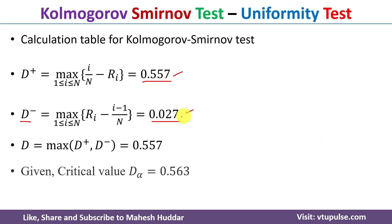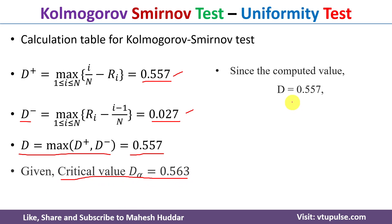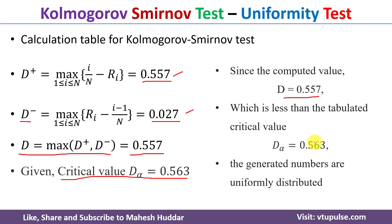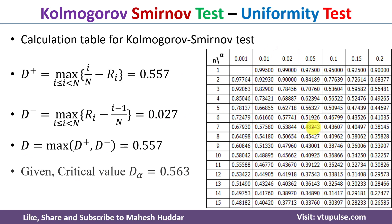Once we calculate D+ and D-, we compute the D value, which is the maximum of D+ and D-. Comparing 0.557 and 0.027, we get D equal to 0.557. The critical value is given as 0.563, and the computed value 0.557 is less than the critical value. So the generated numbers are uniformly distributed. If the critical value is not given but the alpha value is given, we use the D-table to find the critical value.